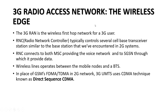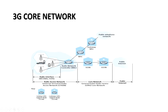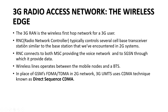Talking about the 3G Radio Access Network: it is the wireless first-hop network for a 3G user. As you can see, this is the first-hop router for any of the mobile nodes. The Radio Network Controller typically controls several cell base transceiver stations, similar to the base stations we encountered in 2G systems. It also connects both to the MSC, providing the voice network, and to the SGSN, through which it provides data. So it acts as an interface between the telephony and data network. Wireless links operate between mobile nodes and a base transceiver station. In place of GSM's FDMA and TDMA, 3G UMTS uses a CDMA technique known as Direct Sequence CDMA, also called DS-CDMA.